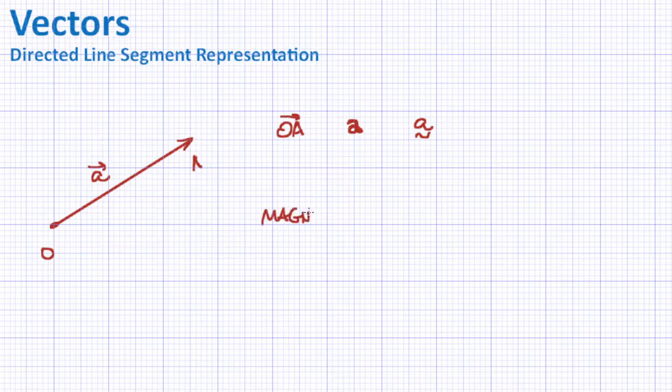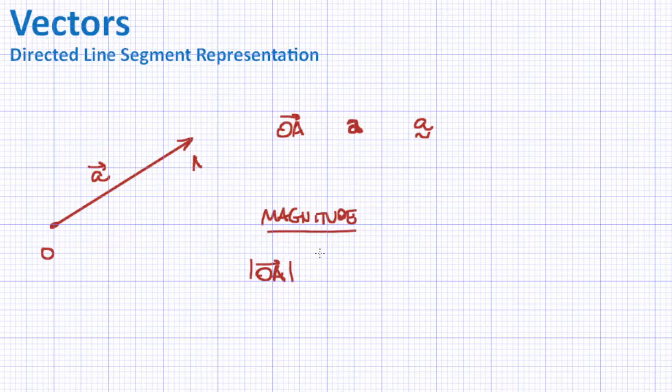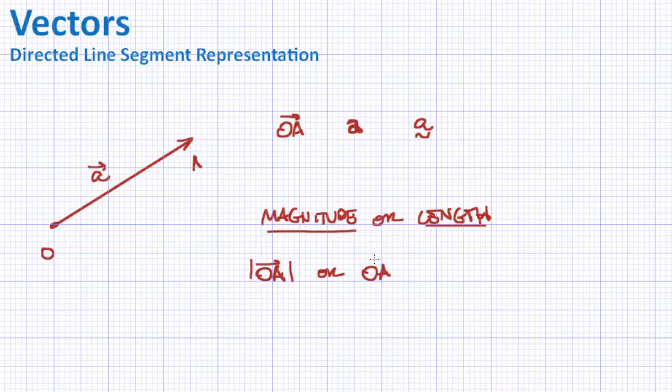Now the magnitude of this vector can also be represented. So if we use this directed line segment, we put some bars before and after. So this tells us the magnitude or the length of the vector. Another way is simply OA. That would mean the value. Or A here. We could use either the bold or the caret notation as well.